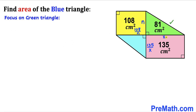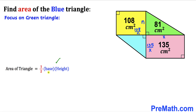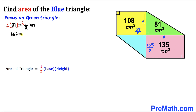Now focusing on the green right triangle, whose side lengths are x and n and whose area is 81. Using the triangle area formula — area = ½ · base · height — with base x and height n: 81 = ½ · x · n. Multiplying both sides by 2 gives 162 = x · n. We'll call this equation 1.